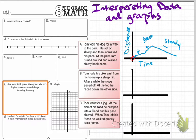Let's look at our next example. It says Tom rode his bike east from his home up a steep hill. After a while, the slope eased off. At the top of the hill, he raced down to the other side. Again, we're going to look for keywords that give us clues about what's happening in this problem.